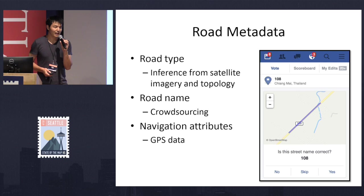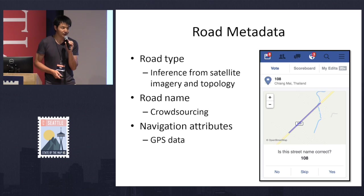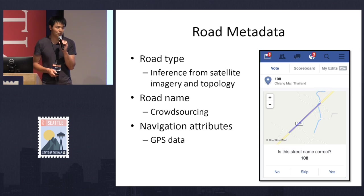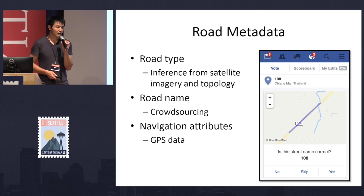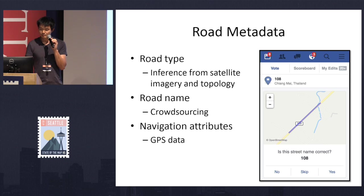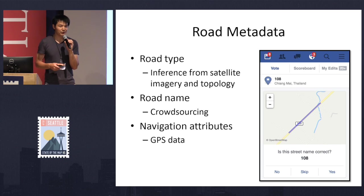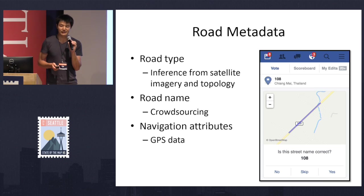We can determine the road types based on the local mapping convention. For road names, we're experimenting with crowdsourcing technologies. If you are in Thailand, we ask you to confirm a road is indeed named 108. For navigation attributes, there are many published results — we can use GPS probe data to infer, for example, whether a road is one way or if there's any turn restriction.